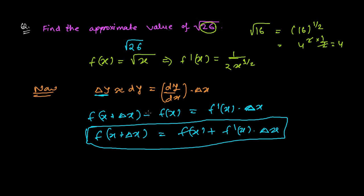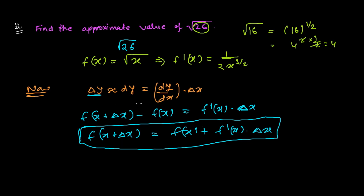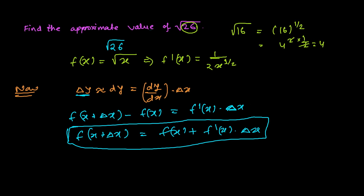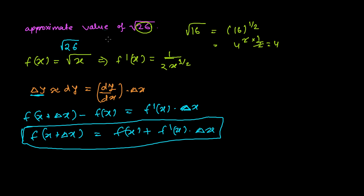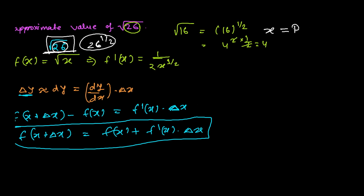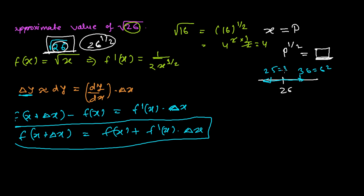Once we have the formula, the next step is to choose x. The given expression is √26, which has power 1/2, so we need a number x = p such that p^(1/2) gives an easy result, and p is close to 26. Numbers close to 26 are 25 (= 5²) and 36 (= 6²). We choose 25 since it is closer.